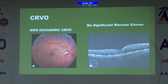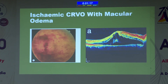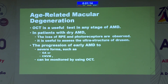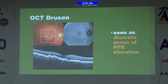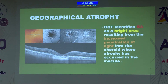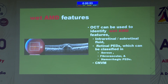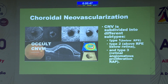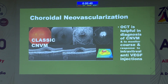This is a case of non-ischemic CRVO with no macular edema, and ischemic CRVO with macular edema in another case. OCT is very helpful in diagnosis of all the stages of ARMD. In drusen, it shows discrete areas of RPE elevation. In geographical atrophy, it shows a bright area. In wet ARMD, it shows various features like pigment epithelial detachment and CNVM. CNVM has three types: Type 1 corresponds to occult, and Type 2 corresponds to classic CNVM. OCT is helpful in making diagnoses of CNVM and to monitor course and response to intravitreal injections.